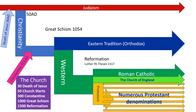The next date we need is Constantine, around 300 AD — that's when Christianity moves from being a personal religious position within the empire to becoming the religion of the empire, getting linked with political structures. The dates in summary: 30 death of Jesus, 50 church starts, 300 Constantine. The next key event is the Great Schism at around 1000 AD, where Eastern Orthodox and the West split — a mixture of politics and theology — with the formal date being 1054.